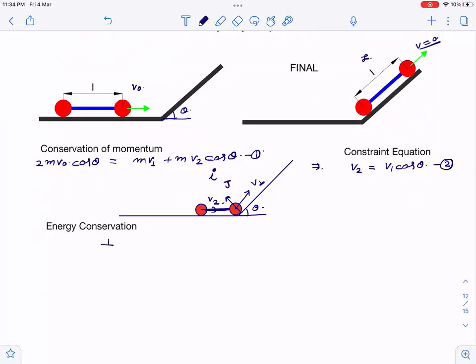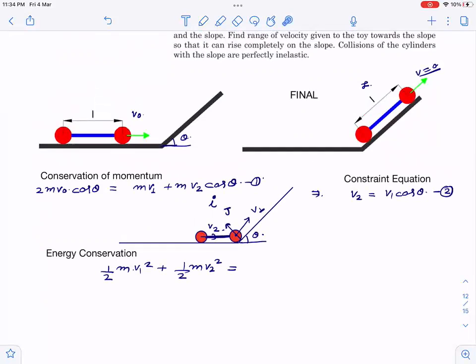Writing energy conservation: half m v₁ squared plus half m v₂ squared. Potential energy here is zero. Finally, kinetic energy is zero. Potential energy: this ball is still on the ground, but this ball has reached height l sin theta. So this equals m g l sin theta. This is equation number three.